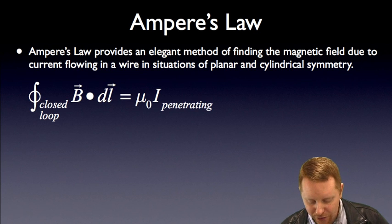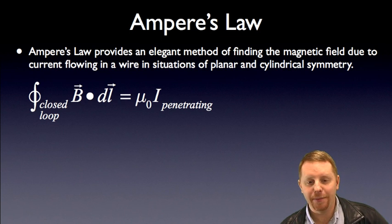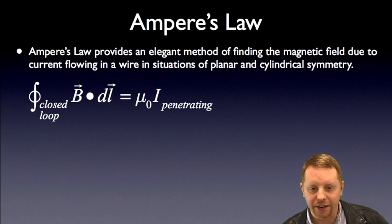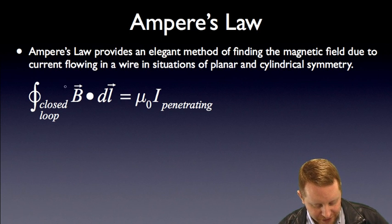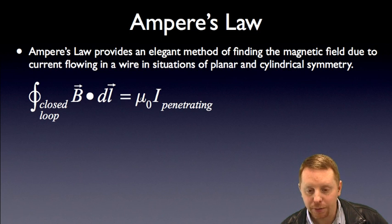Let's start by talking about what Ampere's Law is. Ampere's Law provides an elegant method for finding the magnetic field due to current flowing in a wire in situations where you have planar or cylindrical symmetries. What it specifically states is that the integral around any closed loop of the magnetic field dotted with dl equals μ₀, the permeability of free space, times the current that penetrates that closed loop.